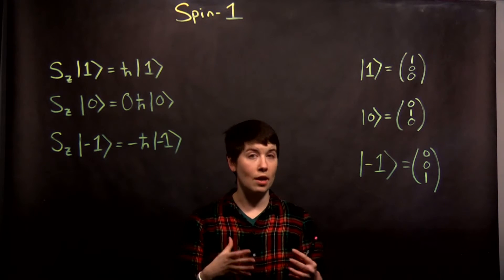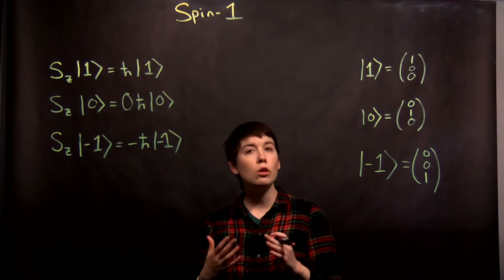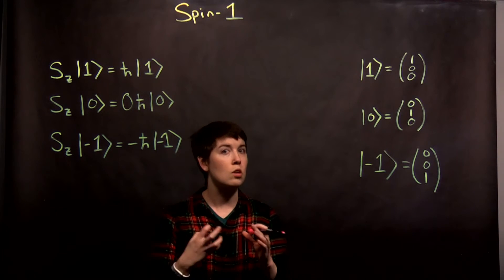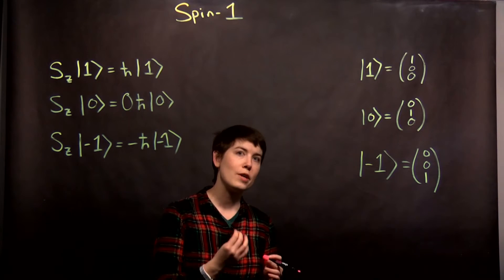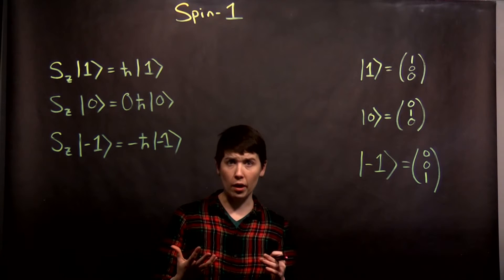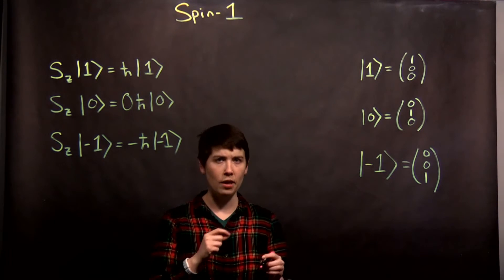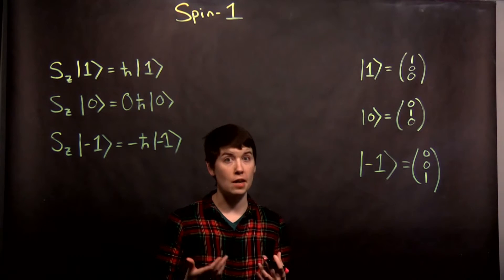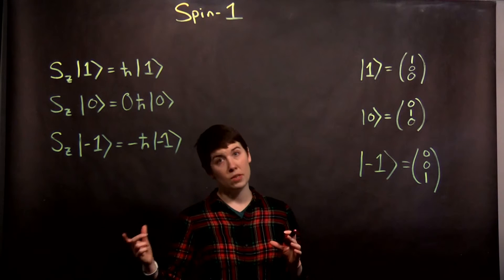So when we write this in matrix notation, we have to actually have three pieces to this. So we're no longer going to be talking about rows and column vectors with two entries. They're going to have three. So all of our operators will actually be a three-by-three matrix. So it's still square, but you might want to go back if you've only learned how to take the determinant in a simple way. Now it's a little more complicated to take the determinant.